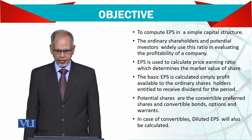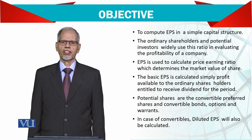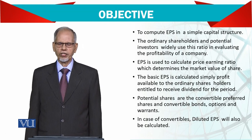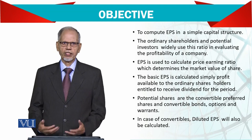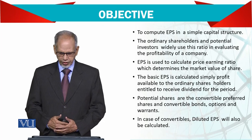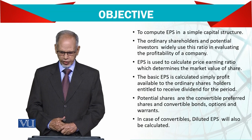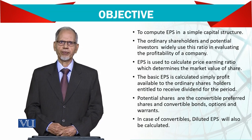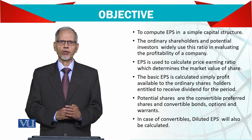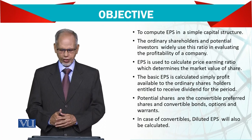The objective is to compute earnings per share in a simple capital structure — meaning there are only ordinary shares, also called common shares, and no change during the year in the number of shares. Ordinary shareholders and potential shareholders who invest widely use this ratio to evaluate the profitability of a company, because the last item in the income statement is reported as earnings per share.